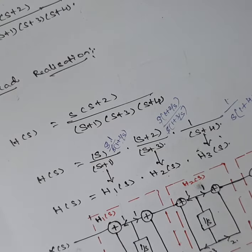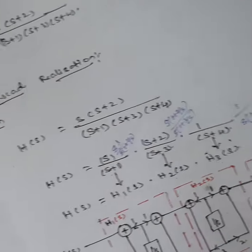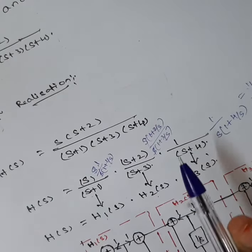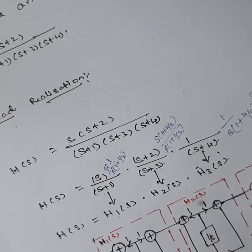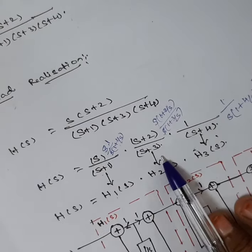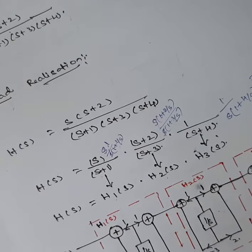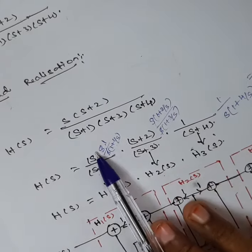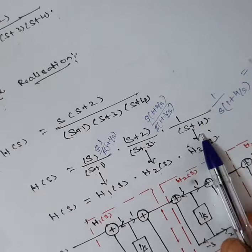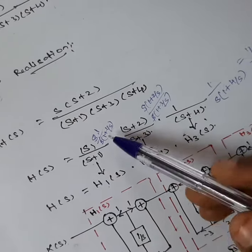For cascade structure, you want to express H(s) in the form H1(s)·H2(s)·H3(s). For parallel structure, you want the form H1(s) + H2(s) + H3(s). From the given question, H1(s) = s/(s+1), H2(s) = (s+2)/(s+3), and H3(s) = 1/(s+4).